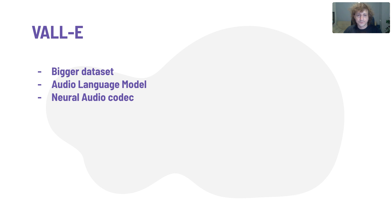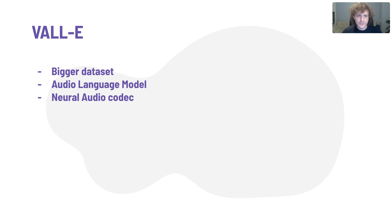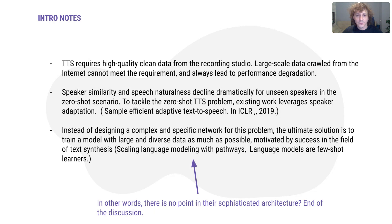And the third point: Neural Audio Codec. The idea of this model is to compress our audio signal into some compact representation, so we can compress it for some usage — transmit it somewhere using fewer bits or fewer resources — and then unpack it and hear the audio fully restored with almost unnoticeable changes or losses. So again, three main points for this paper and for this idea to work quite well.